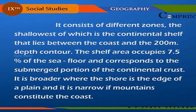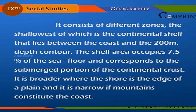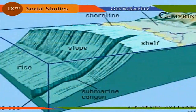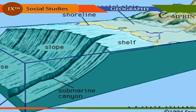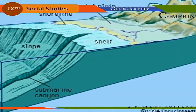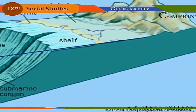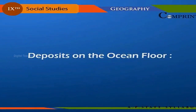The seabed consists of different zones. The shallowest is the continental shelf, which lies between the coast and the 200-meter depth contour. The shelf area occupies 7.5 percent of the seafloor and corresponds to the submerged portion of the continental crust. It is broader where the shore is the edge of a plain and narrow if mountains constitute the coast. The continental slope meets the abyssal plain at a gentler slope called the continental rise.